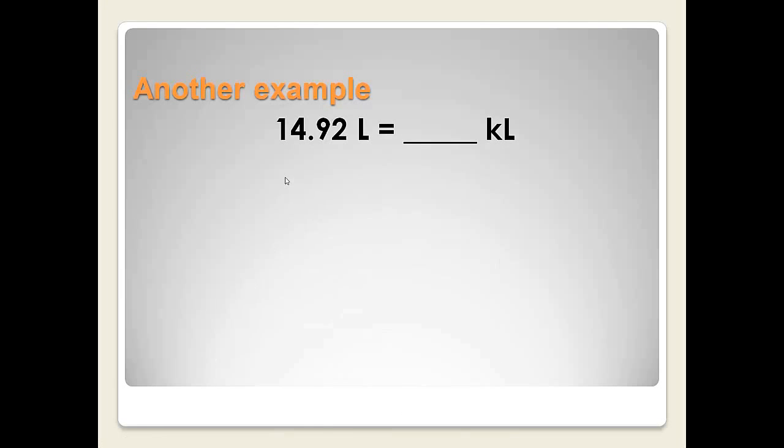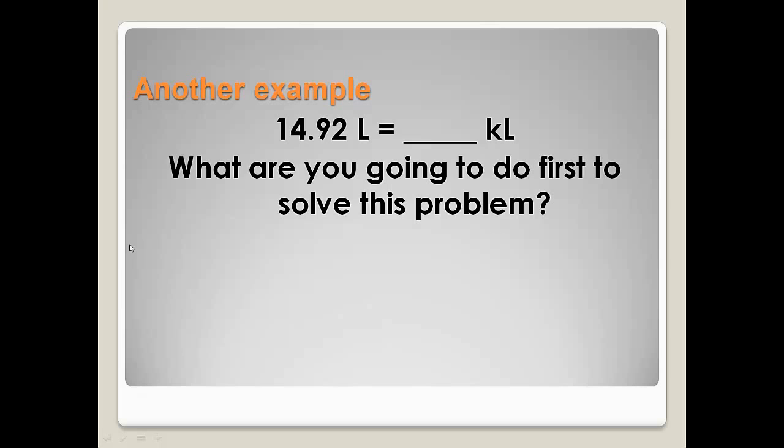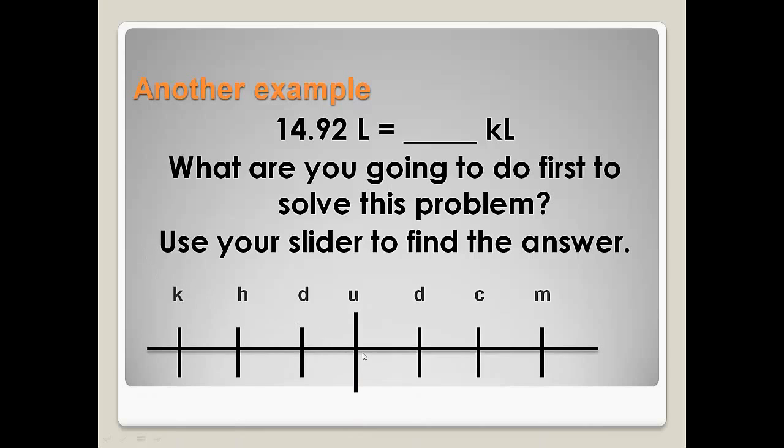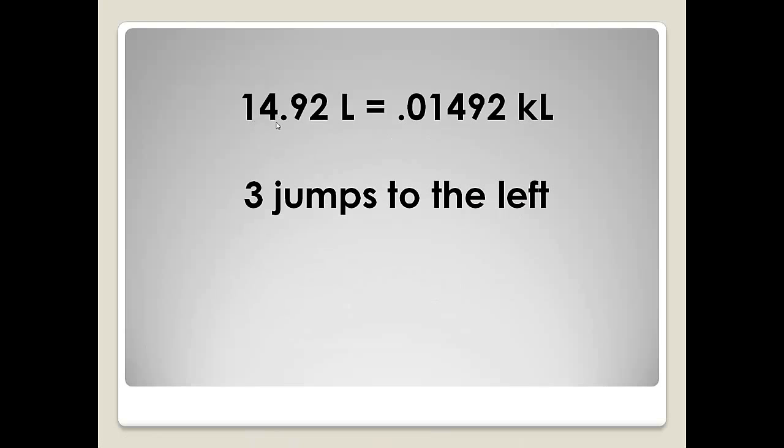Let's do another example. 14.92 liters is how many kiloliters? Pause the tape now and talk to someone around you or write down what your first step is going to be. You're going to use your slider to find out the answer. We're going to start on liters. Liter went under our units or our root word column. We're going to go from liters to kilo. Let's count 1, 2, 3 to the left. Indeed, three jumps to the left. 14.92 liters becomes 0.01492 kiloliters.